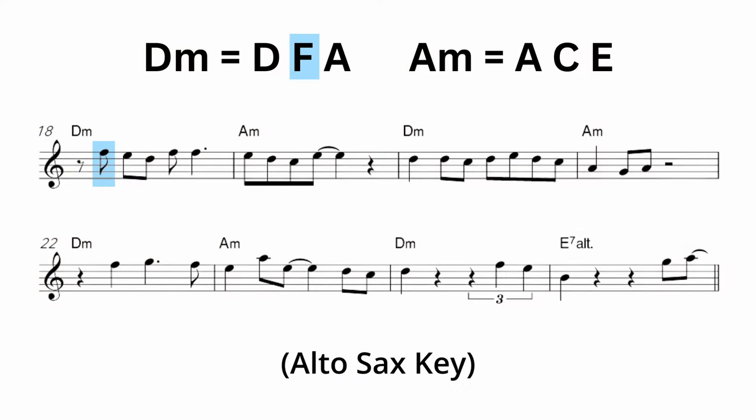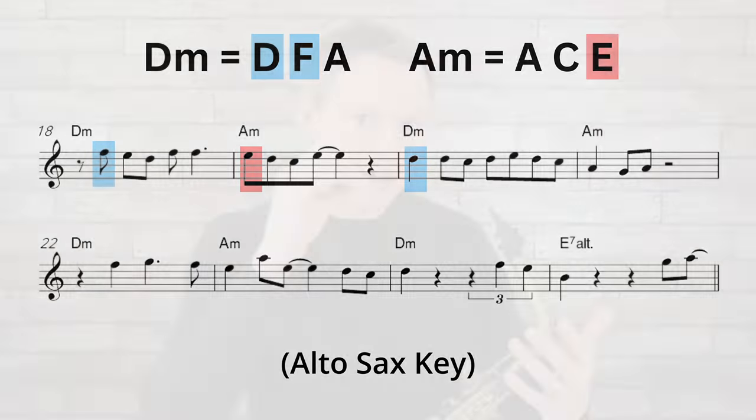For alto sax, for that first chord D minor, we're starting on the note F, and then that moves down to the note E as we hit our A minor chord. It then steps down one more time to the note D as we go back to the D minor. Having these target notes in your mind as you're improvising is a great way to thread your way through the chords as they change.